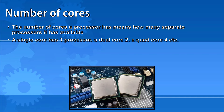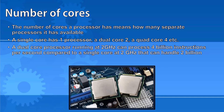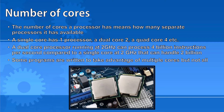A single core processor running at 2 gigahertz can handle 2 billion instructions a second. A dual core with its multiple processors can handle twice as much — 4 billion instructions per second. Some programs are written to take advantage of multiple cores, but not all of them. It's harder to write a program that takes advantage of multiple cores. Even a program like a game written to use multiple cores must still have the main thread run on a single core. It can still send processing to other cores, so it will be a bit quicker, but it's not fair to say that a quad core would be four times as fast as a single core at running the game.